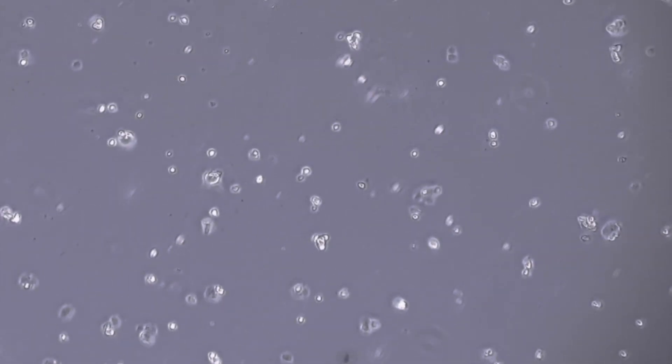This is an image of good quality plated cells right after plating. Ideally, cell clumps should be formed by around 10 to 50 cells.